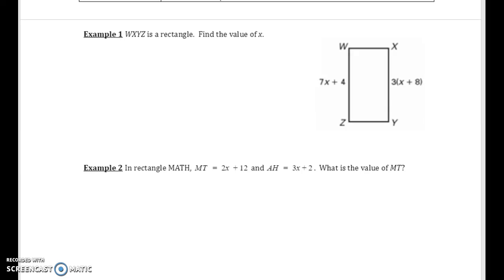Unit 5 Example 1: WXYZ is a rectangle. Find the value of x. If this is a rectangle, that means it is also a parallelogram, meaning opposite sides are congruent, true of all parallelograms.